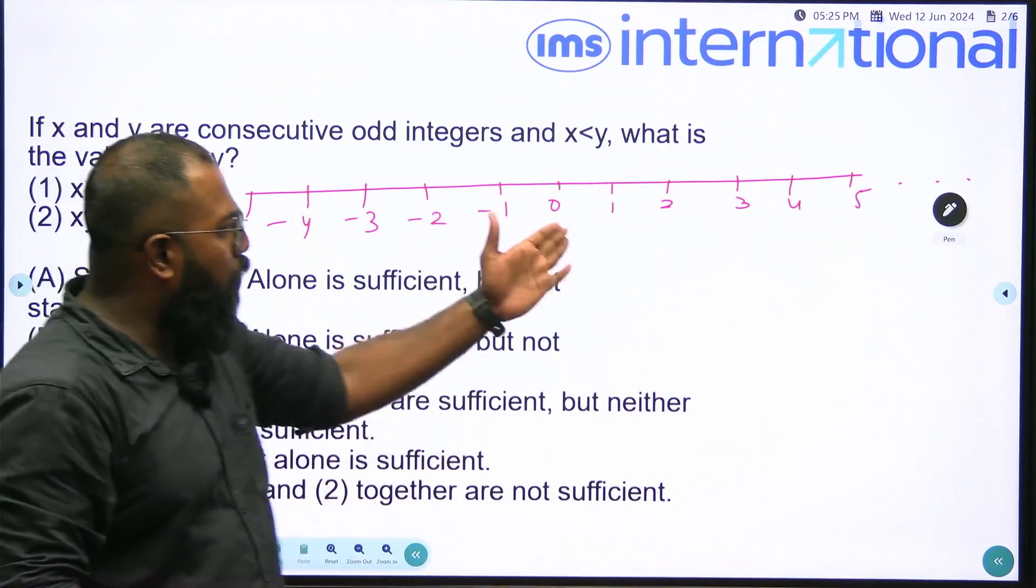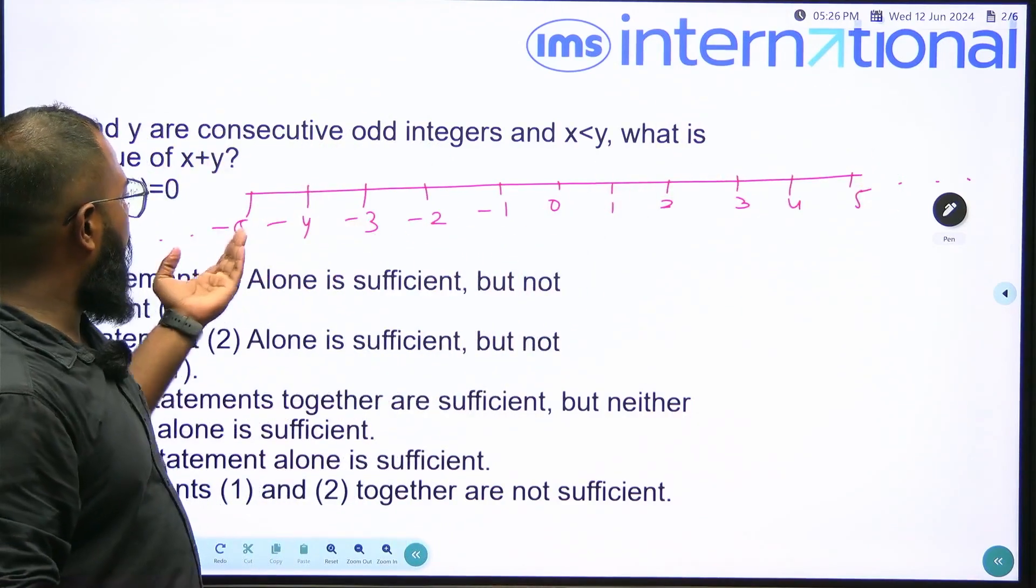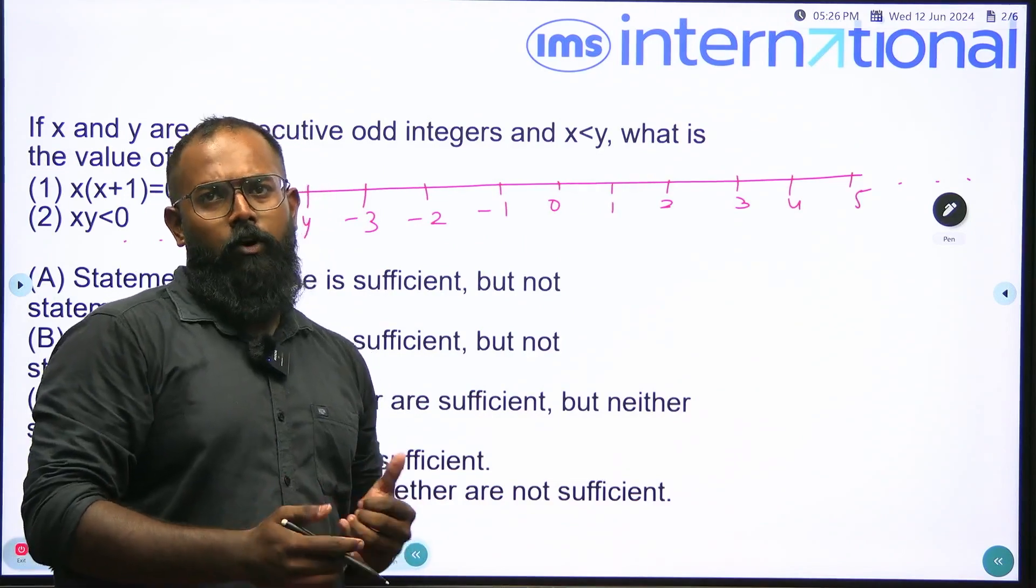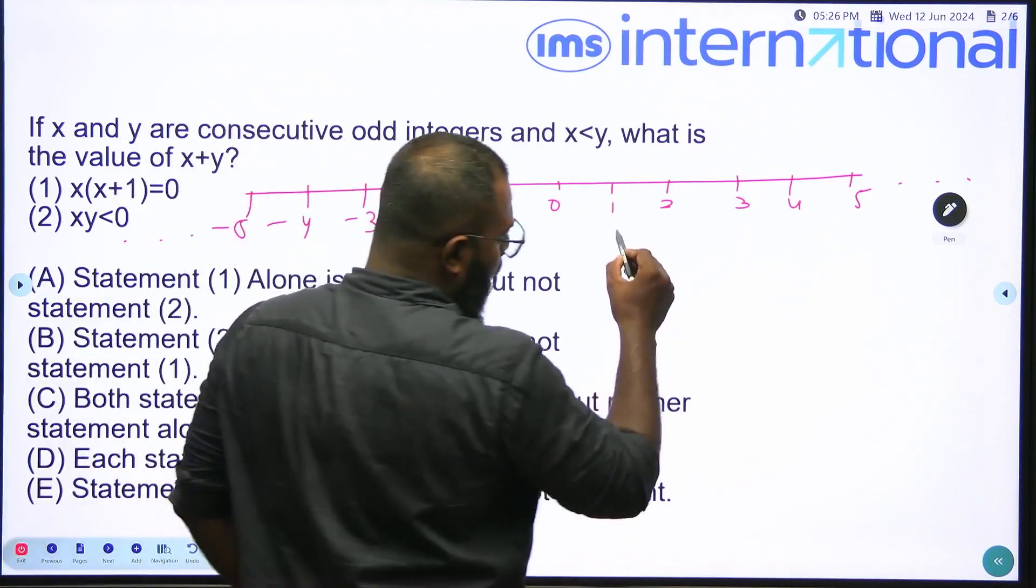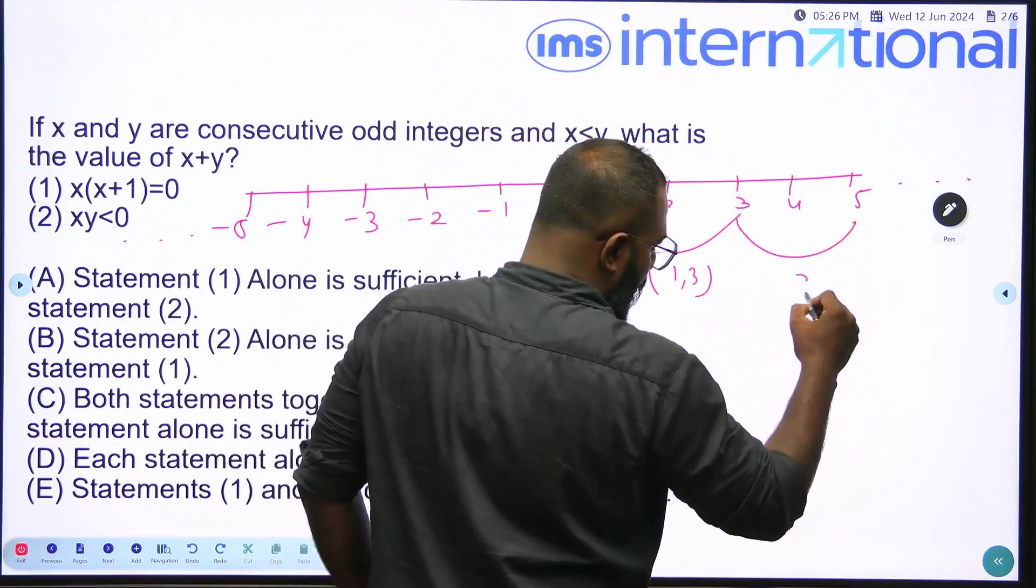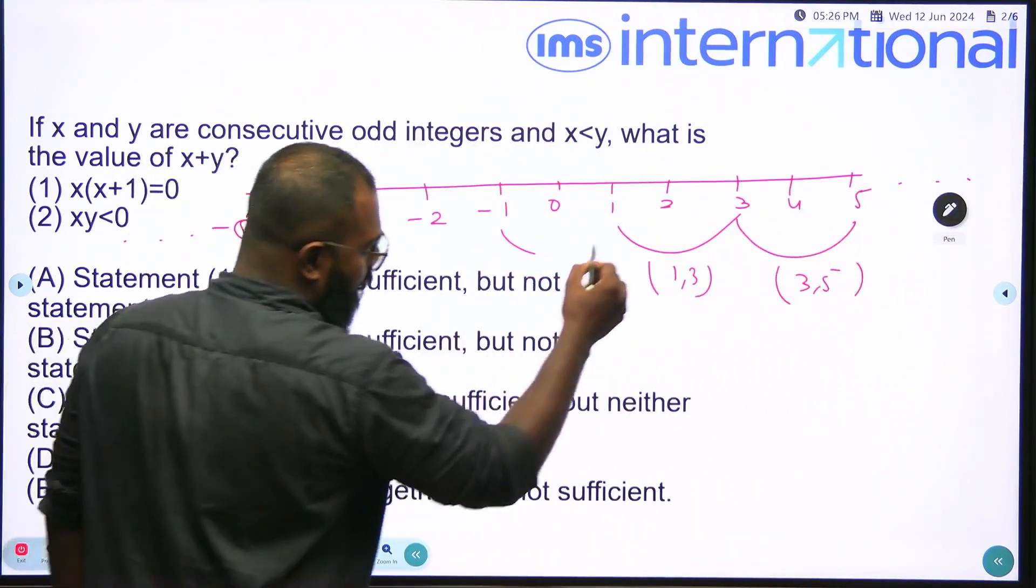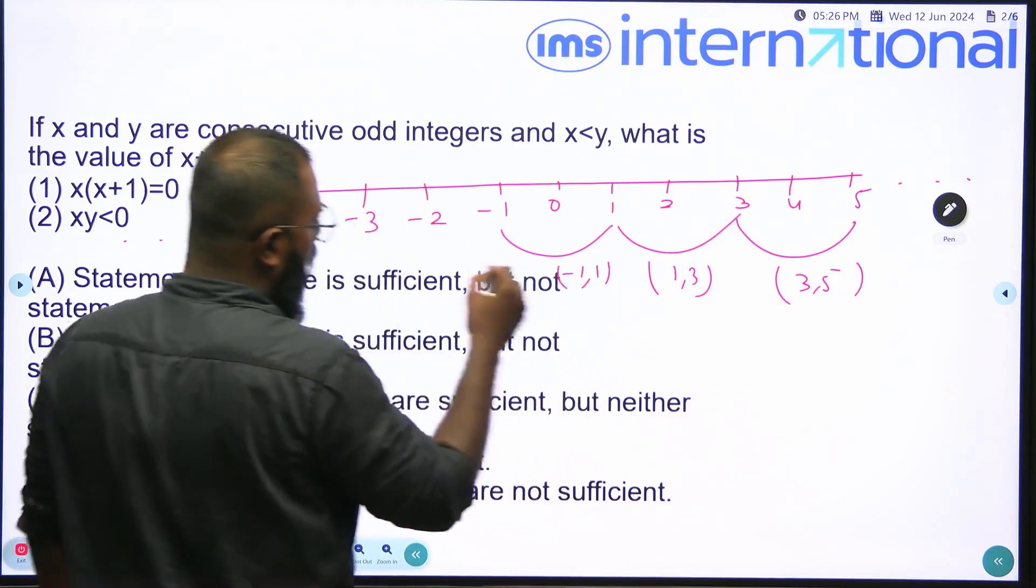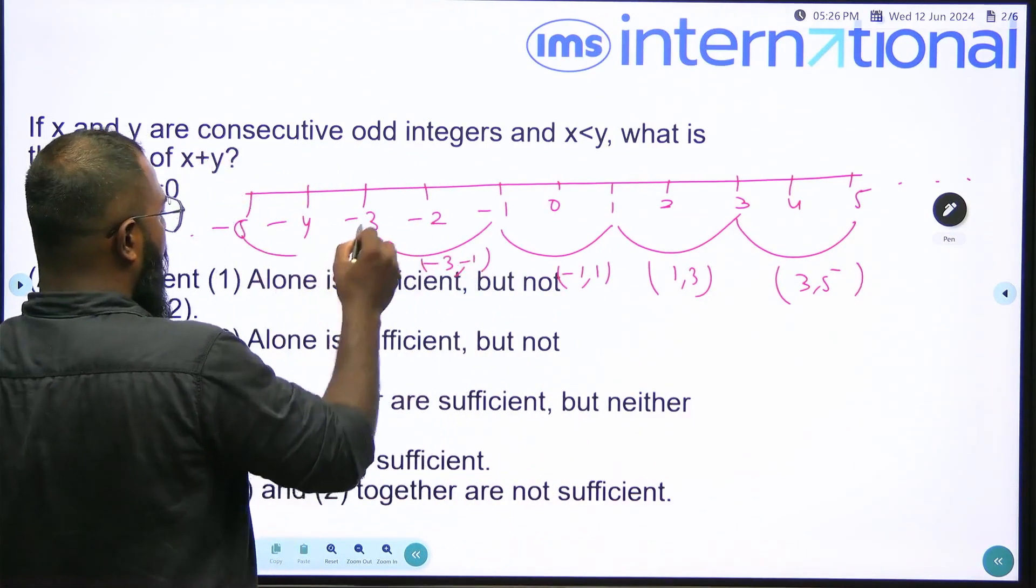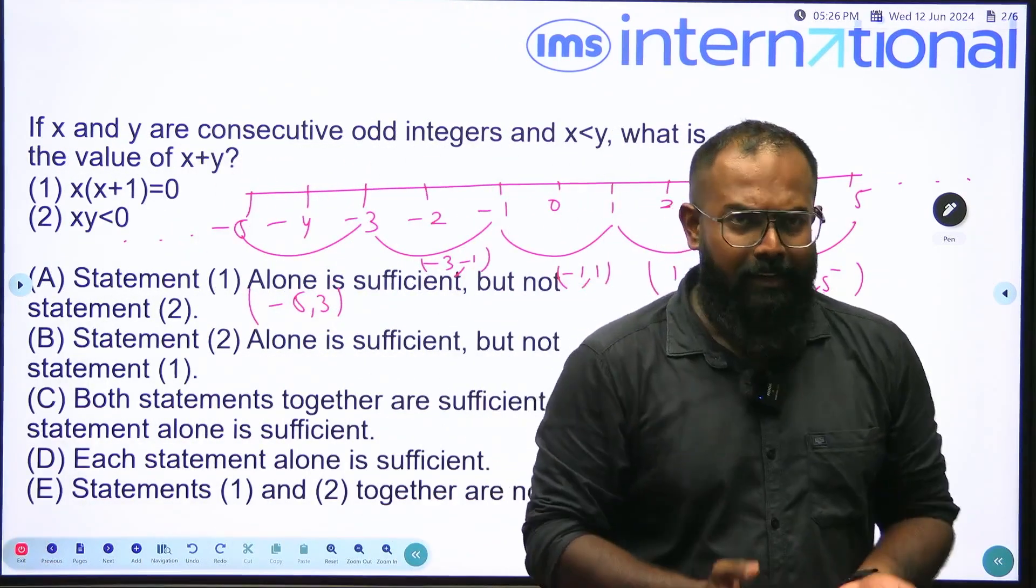Integers like 1, 3, 5, 7 and so on and negative 1, negative 3, negative 5, negative 7 and so on. What are pairs of consecutive odd integers? Integers like 1, 3; 3, 5; 5, 7 and so on and negative 1, 1; negative 3, negative 1; negative 5, negative 3. So we are actually searching one of such pairs, right?